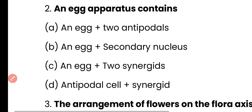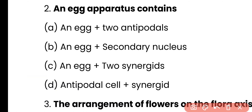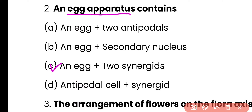Question number 2. An egg apparatus contains: an egg plus two antipodal cells, egg plus canary nucleus, egg plus two synergids, or antipodal cells plus synergid? The correct answer is option C. The egg apparatus is a three-celled structure containing one egg and two synergid cells.